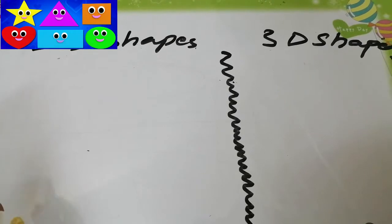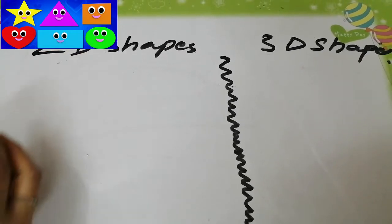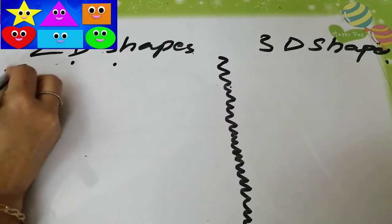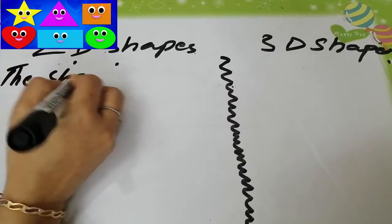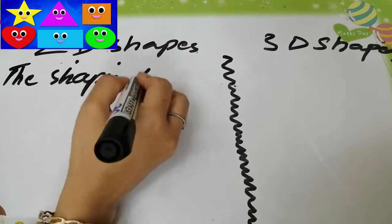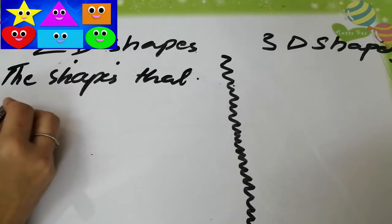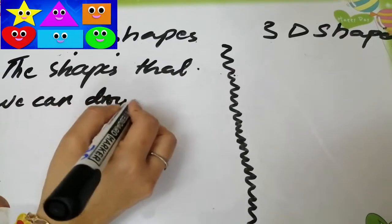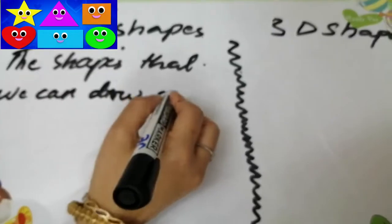First of all we should clear our concept about 2D shapes. The shapes that we can draw on a paper are 2D shapes.